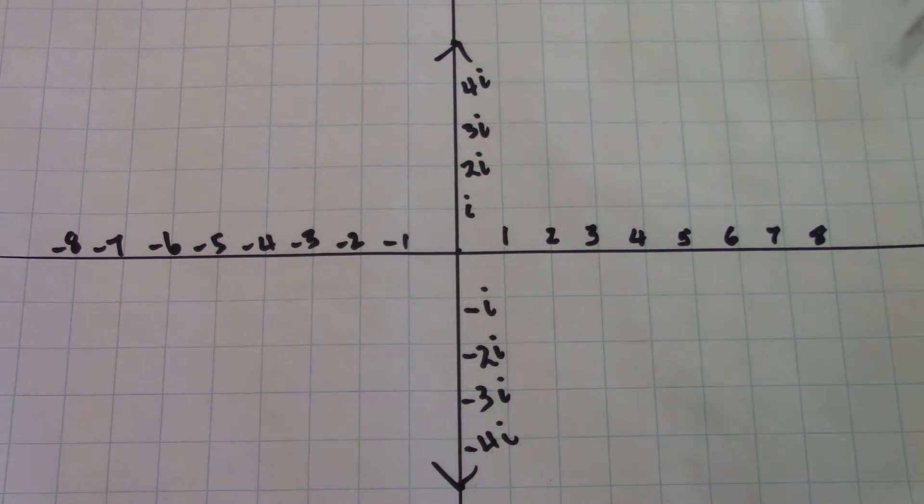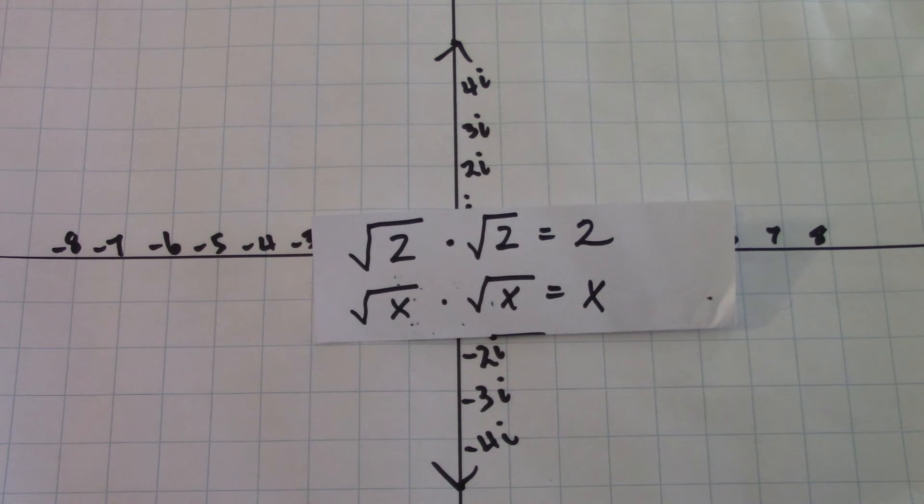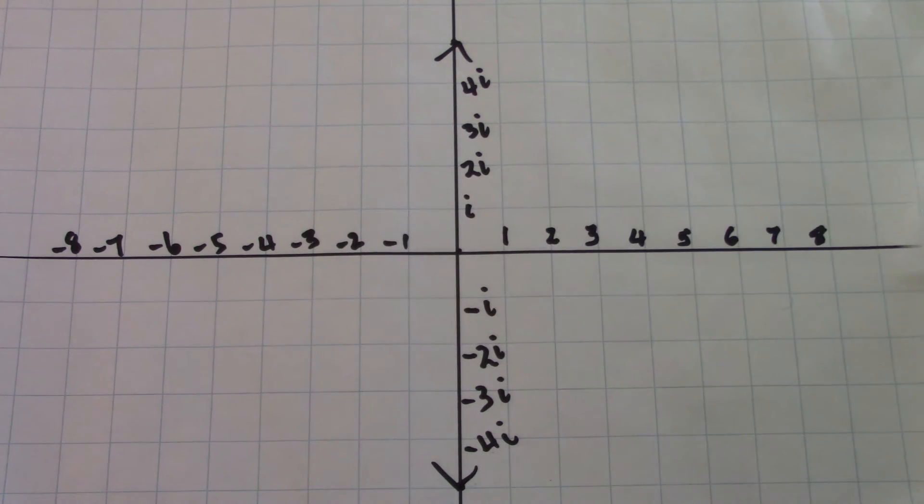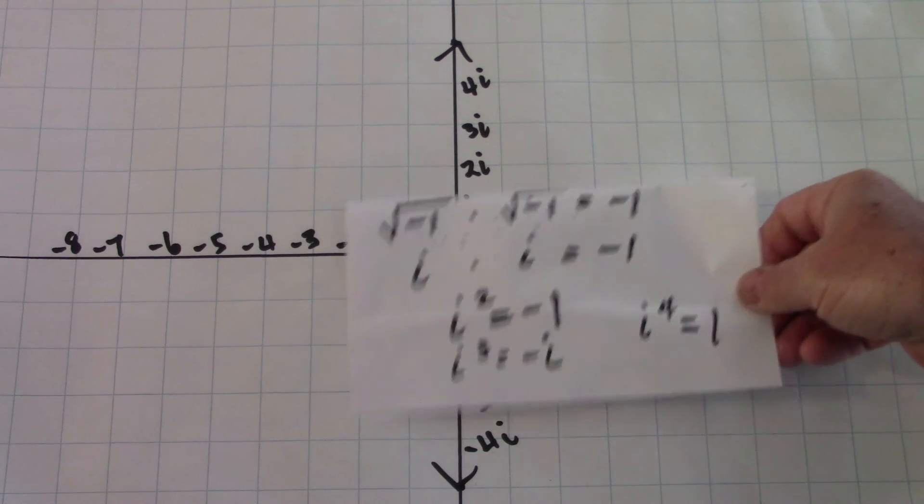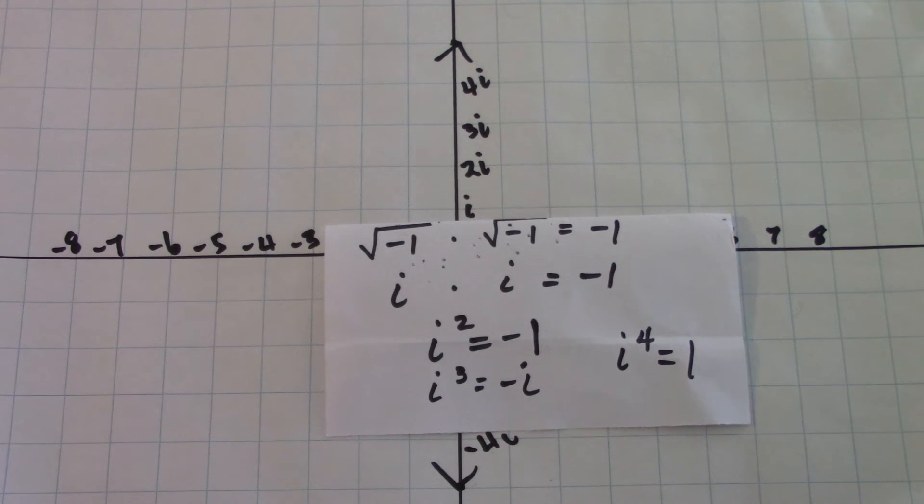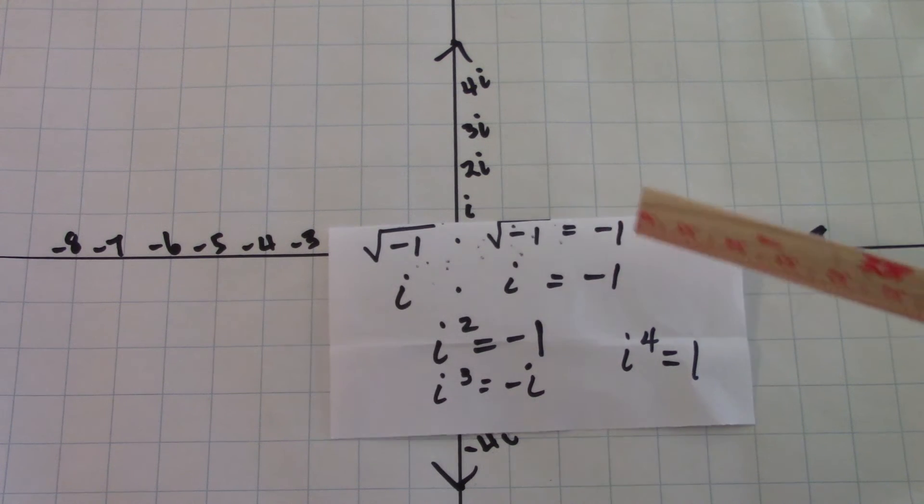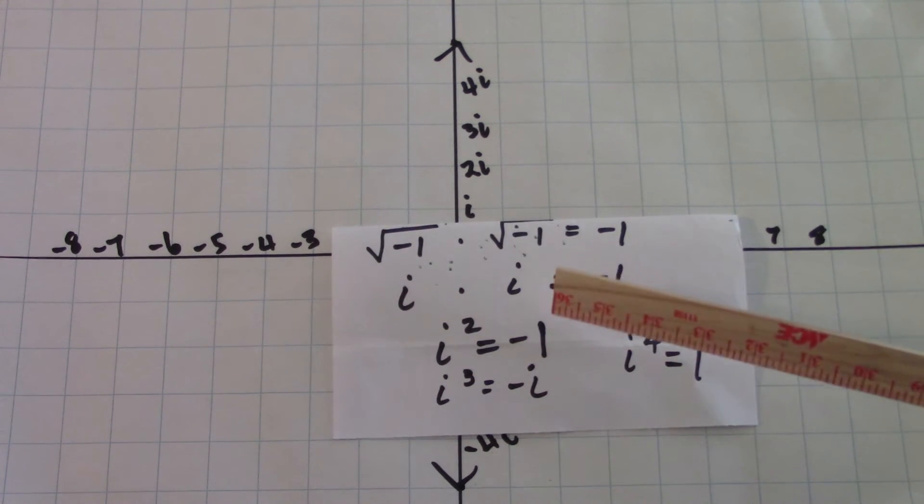We know that square root of two times square root of two is two. In general, the square root of x times the square root of x is just x. So the square root of negative one times the square root of negative one must be negative one. And if square root of negative one is i, then i times i is negative one. So i squared is negative one.